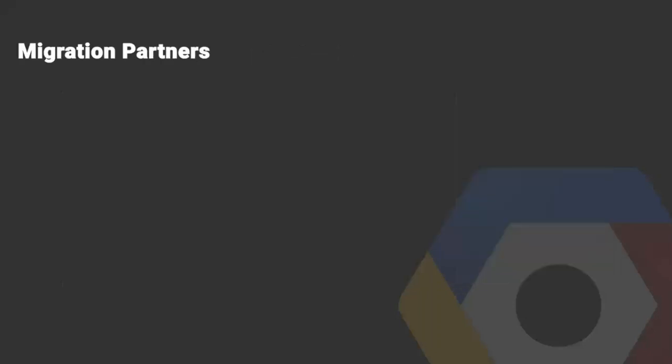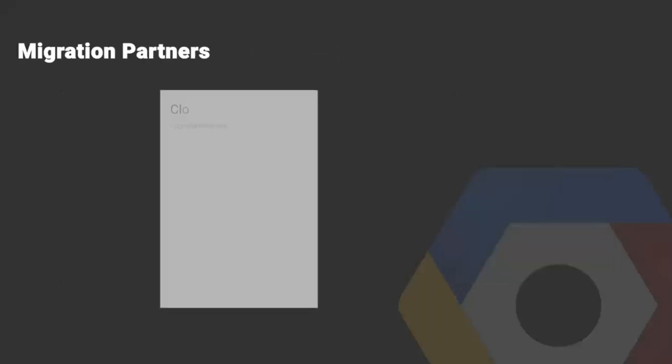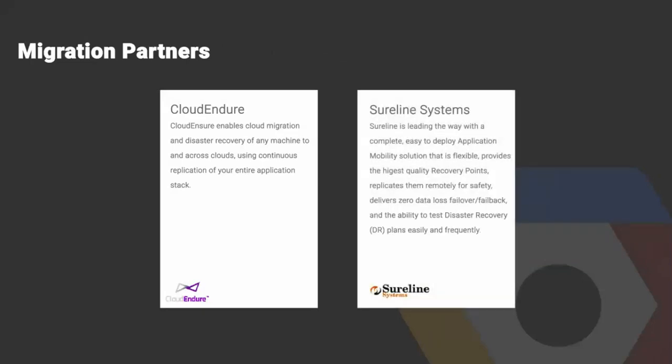We've also identified two migration partners. CloudEndure has a lightweight agent-based solution ideal for self-service engagements. Sureline has a snapshot-based migration solution ideal for large and complex workloads that require professional services.